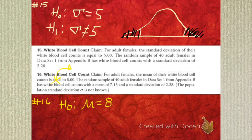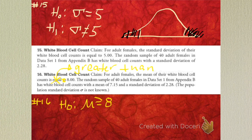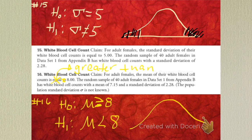Audible — I'm going to scratch out equal and put greater than or equal to. How does this change our null? So the claim is, for females, the mean white blood cell count is greater than or equal to 8. We totally changed that problem, and we say that it is what they say it is. So then our alternative is less than 8. That's a one-tailed test — left tail. Because if we can show that it's less than 8, we reject in that region.